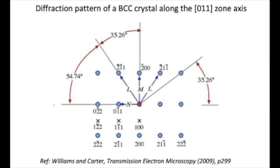Let's first look at 100. From the previous calculation, we know that this is forbidden, and that's why it's invisible, in a pure kinematic diffracting condition. For the spot 200, based on the previous calculation, again we know that it is visible.